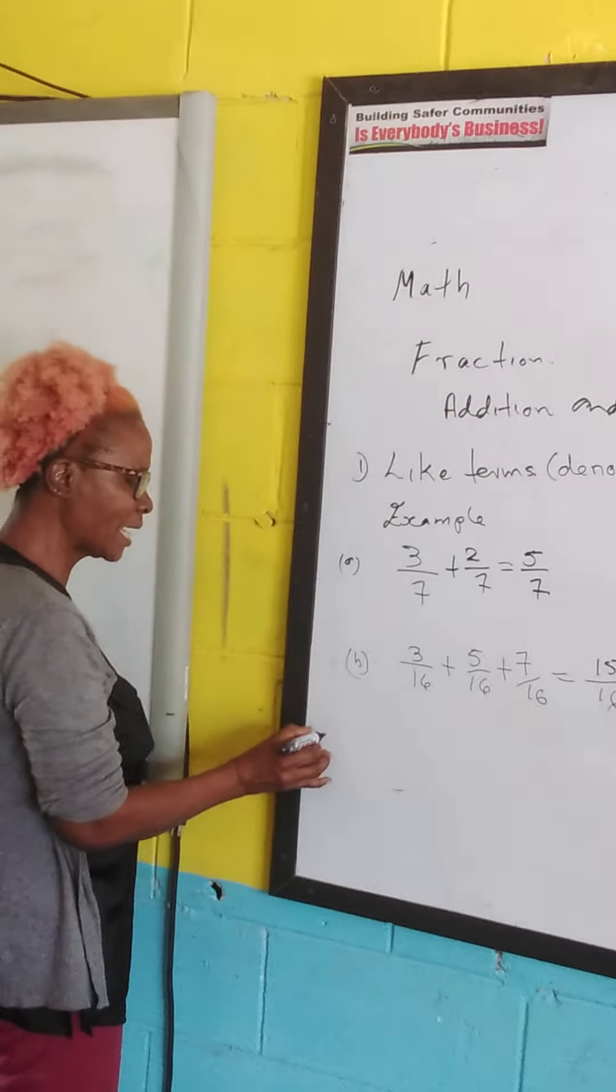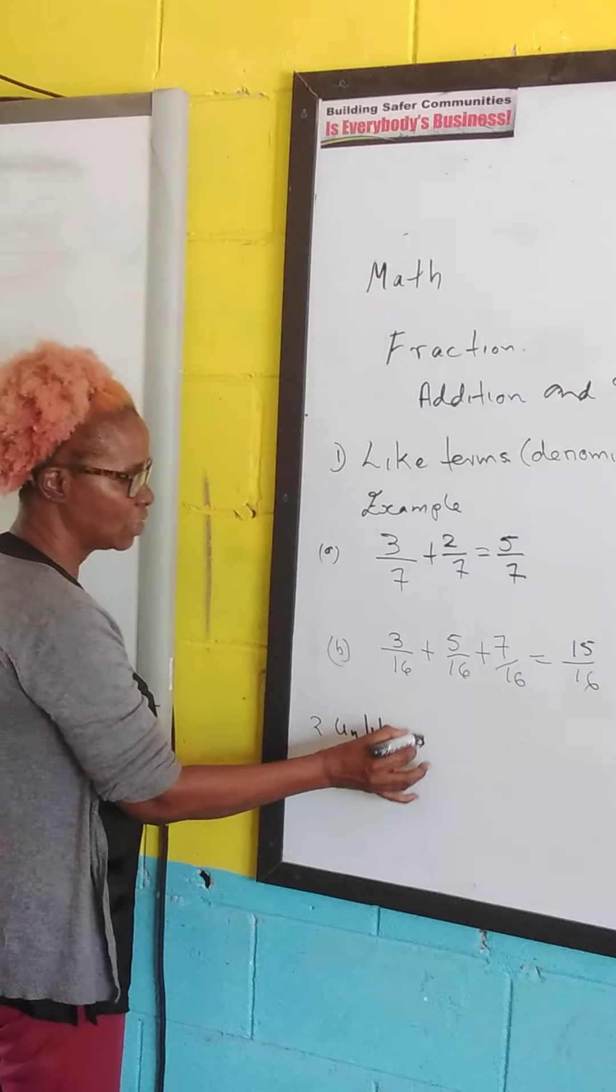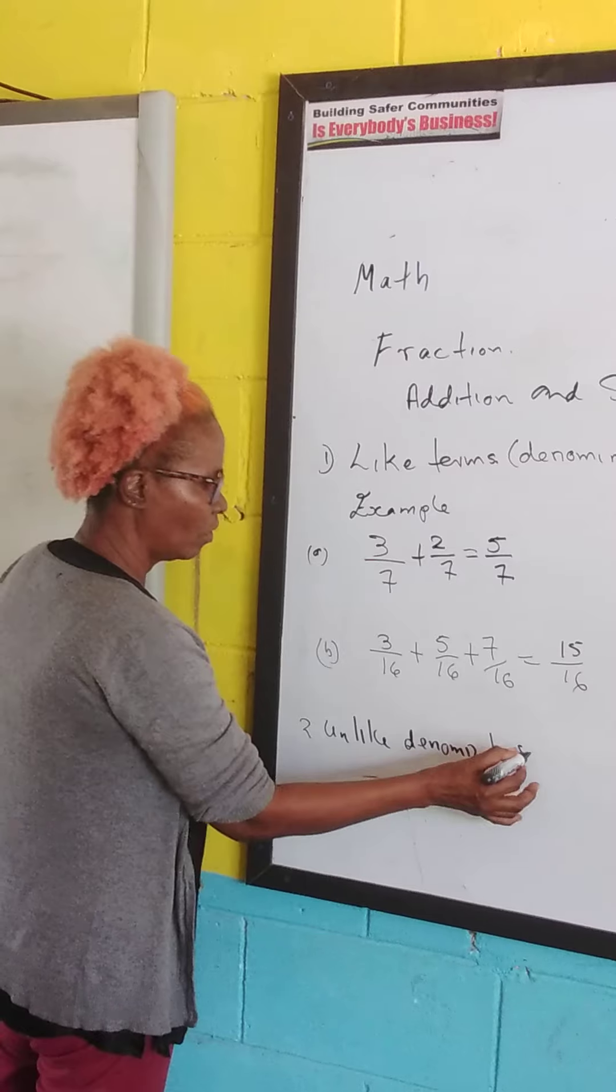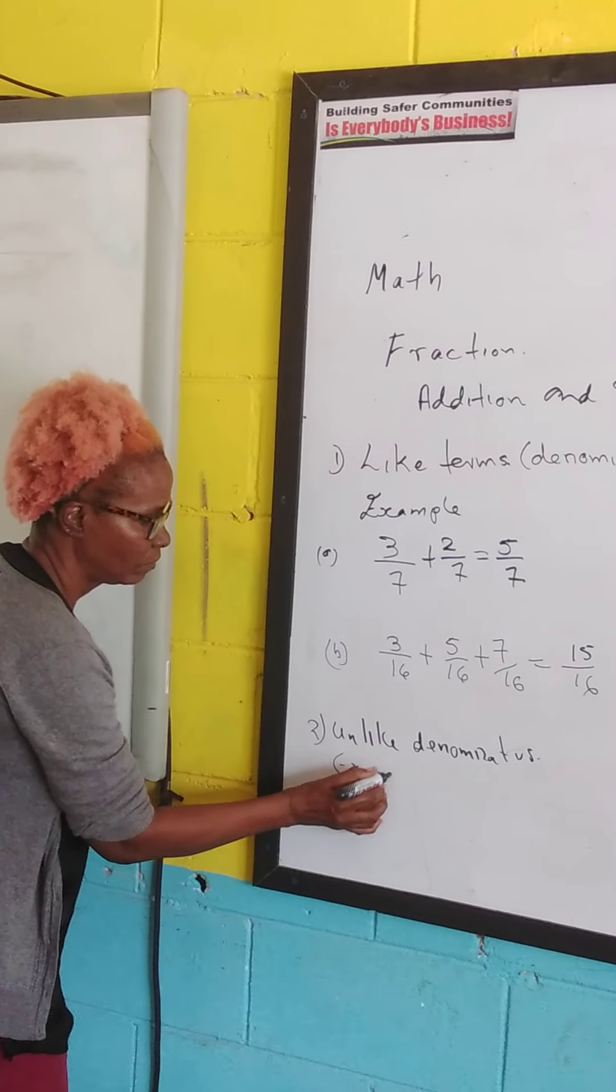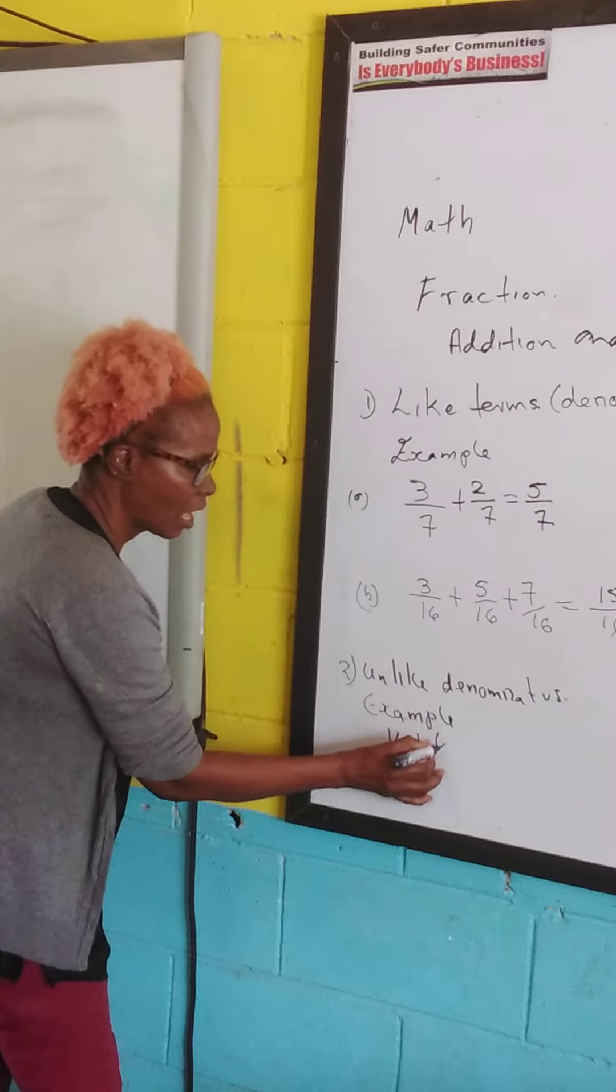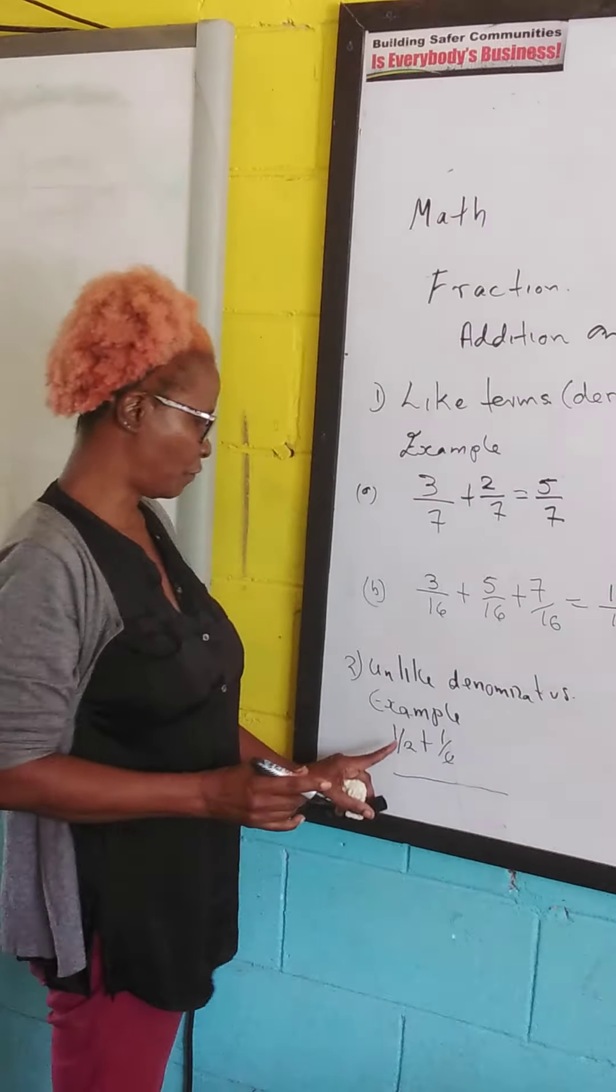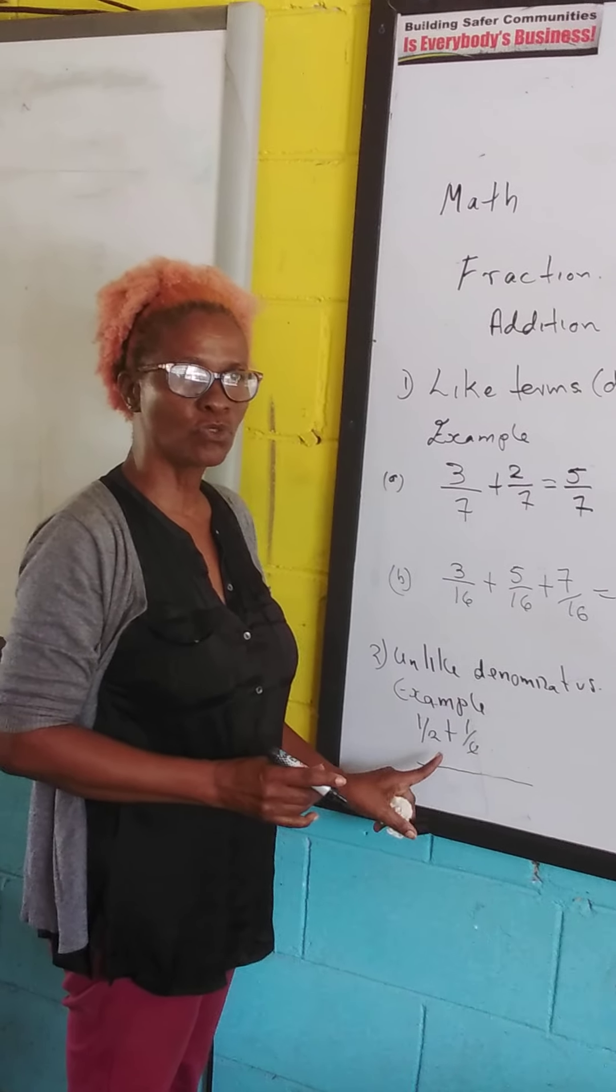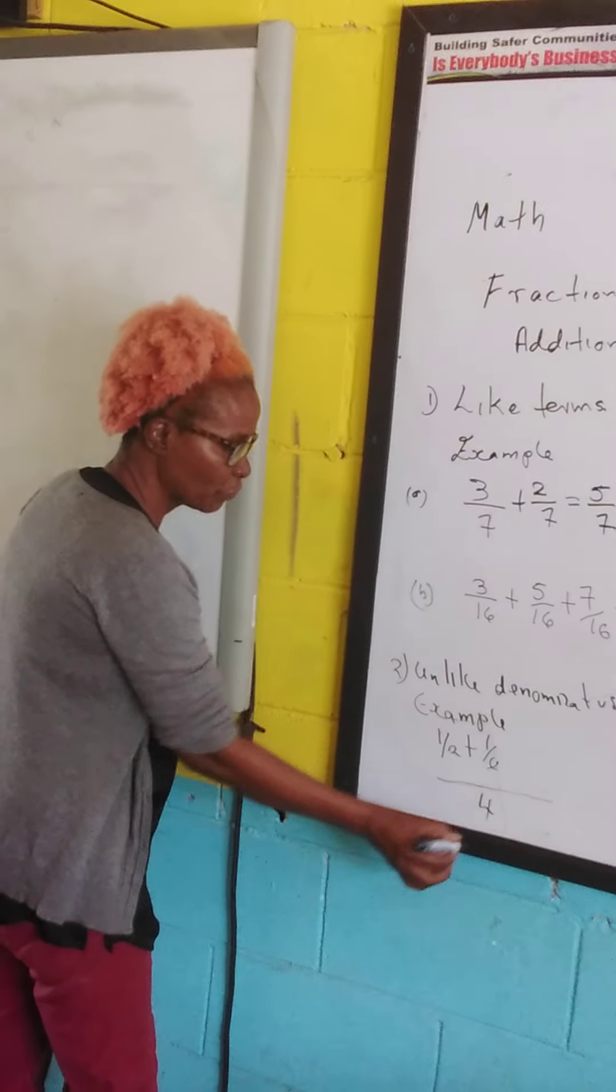So what if we look at unlike denominators? Okay, so unlike denominators, it's a half plus a quarter. We're going to ask ourselves, what number can 4 and 2 go into without a remainder? What number can 4 and 2 go into without a remainder? 4 and 2 can go into 4.